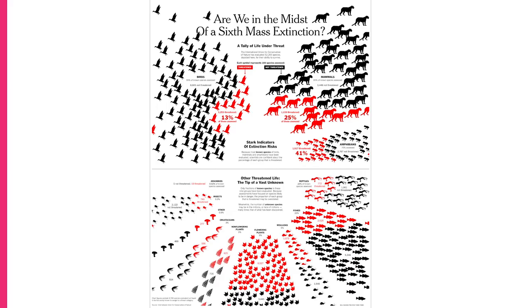So what does contrast look like in an actual infographic? Let's look at this example — 'Are we in the midst of a sixth mass extinction?' Here Bill Marsh from the New York Times is using a lot of contrast in color to draw your eye to what is actually a highly threatened species versus not. For example, we can see flowering plants at the bottom really heavily filled in, and 25% of mammals indicated with red contrasting against black. We can read it pretty quickly, so he's using contrast very effectively to keep your eye moving where it needs to be.